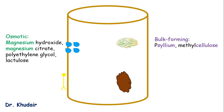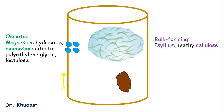Next, we have the bulk-forming agents, like psyllium and methylcellulose. From the names, you can tell that these are fibers, and they work by absorbing water and making a bulky mass that distends the walls of the GI tract, initiating contractions.